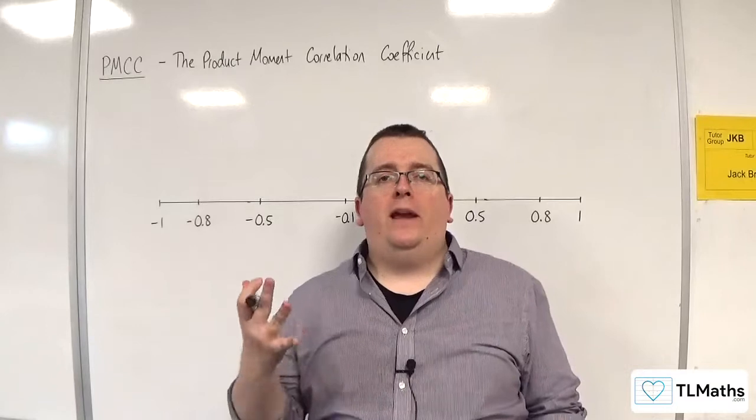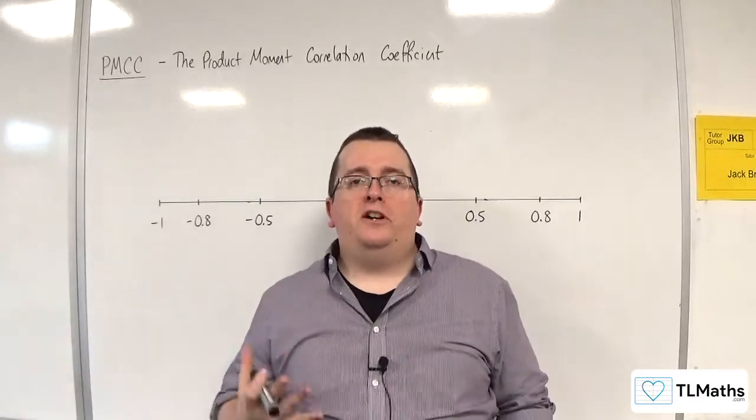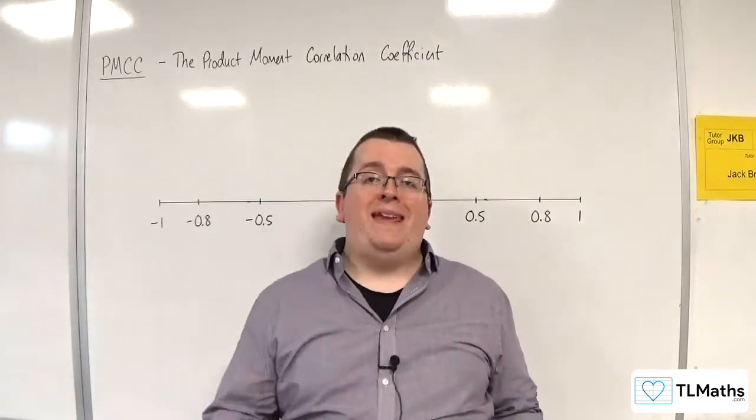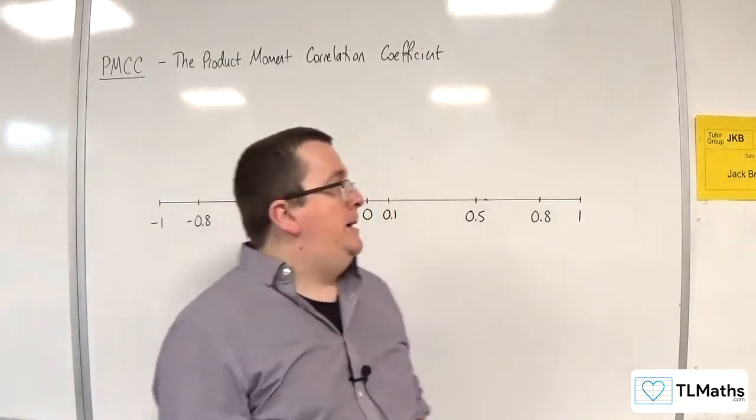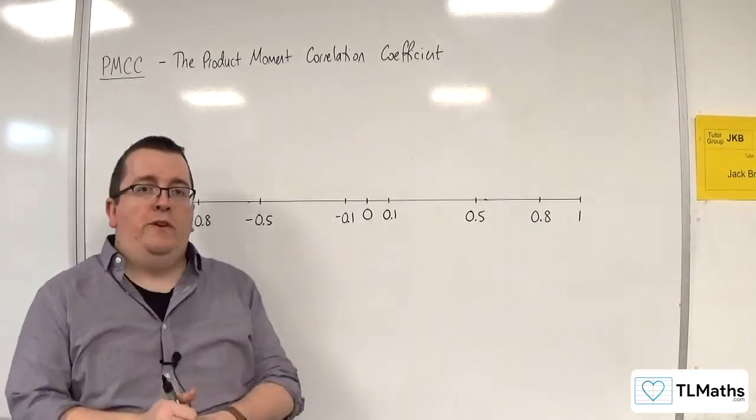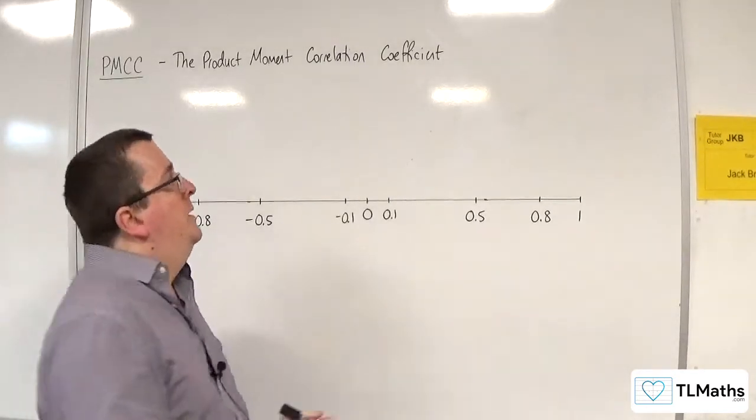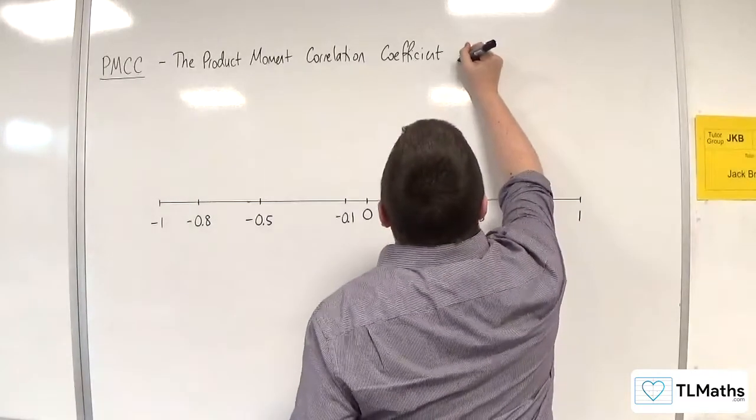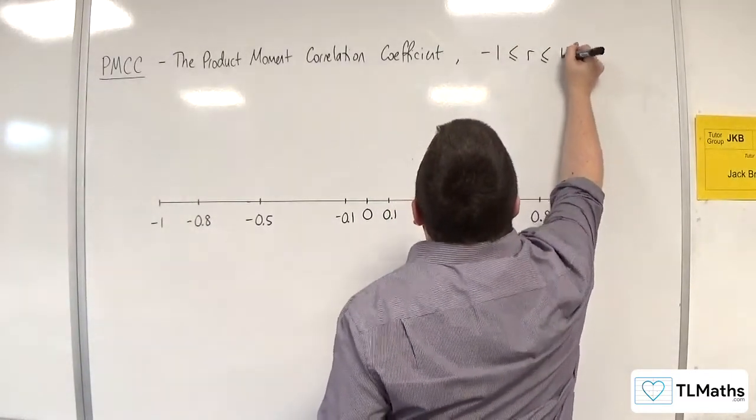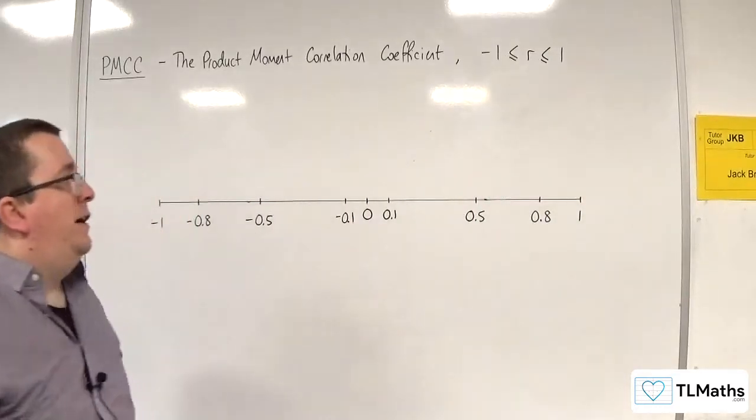In this video I want to introduce you to the product moment correlation coefficient, often abbreviated to PMCC. It gives you a value which we refer to as the value R, and R is a value between minus 1 and 1.